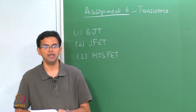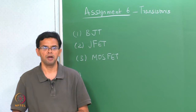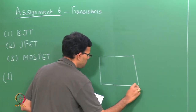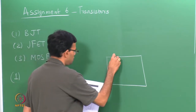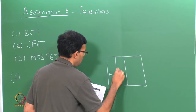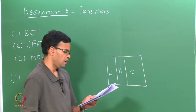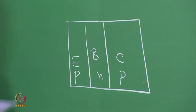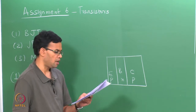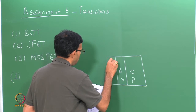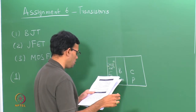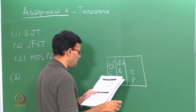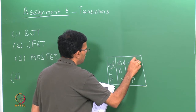In problem 1 we have a PNP bipolar junction transistor. A transistor has essentially three regions: an emitter region, a base, and a collector. In the case of a PNP transistor, you have the emitter and the collector to be P type, the base is N type. The concentrations of the different regions are given: the emitter region has a concentration of 2×10¹⁸ per centimeter cube, the base is 10¹⁶ per centimeter cube, and the collector is also 10¹⁶ per centimeter cube.